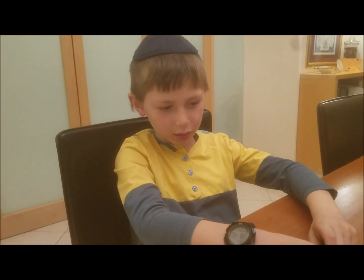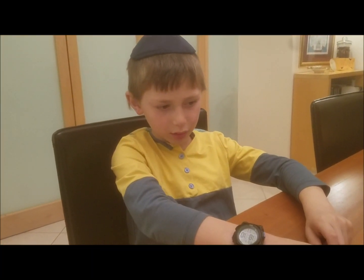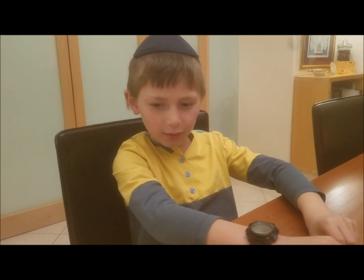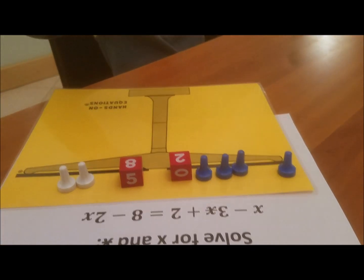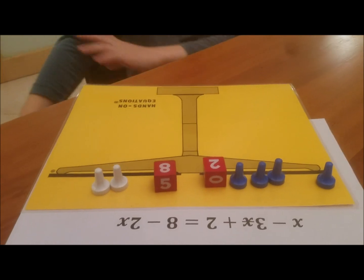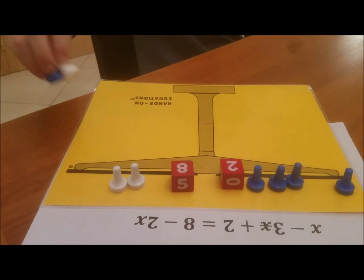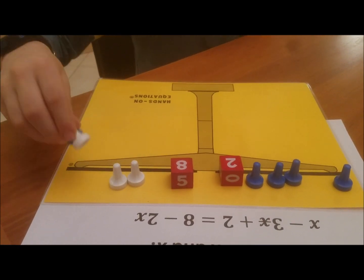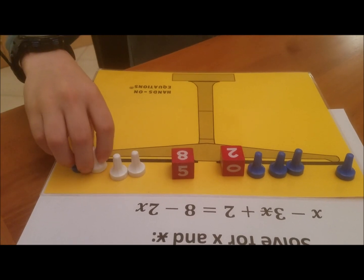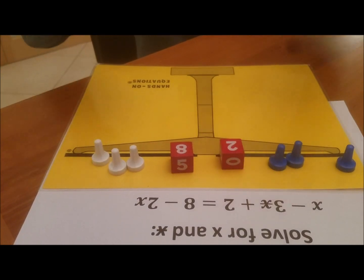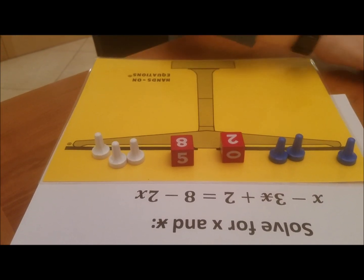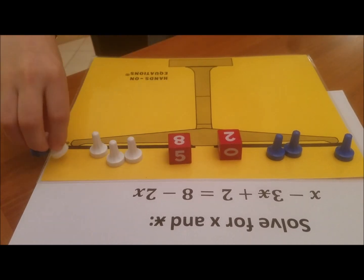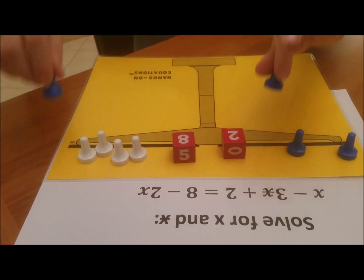Wait, I'm sorry, what did you do? Did you do something? I didn't see what you did. Are you going to add a pair of opposites there and then you can take away a blue pawn? Okay, go ahead. You're going to do that again? Okay, good.